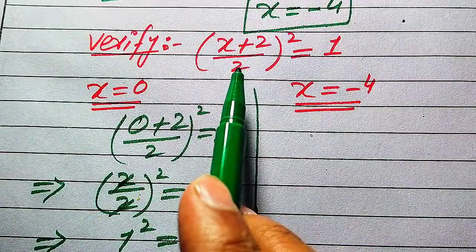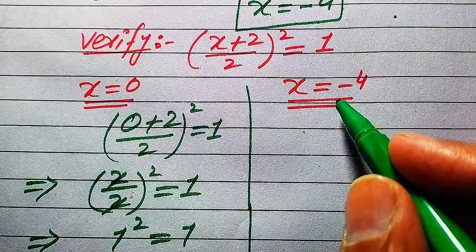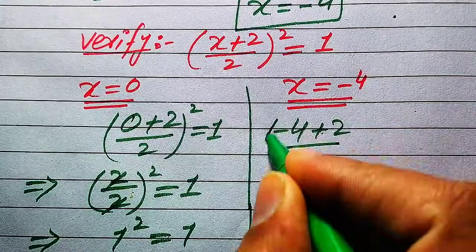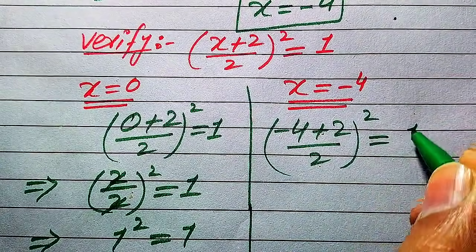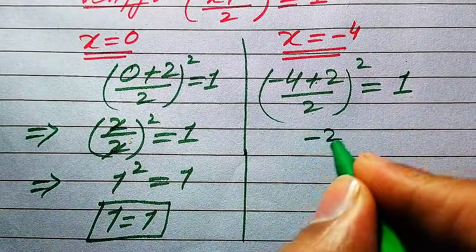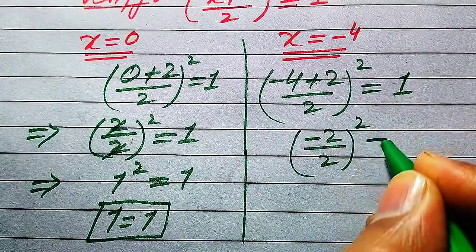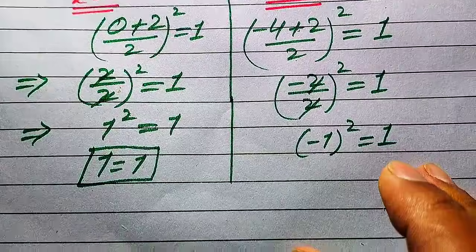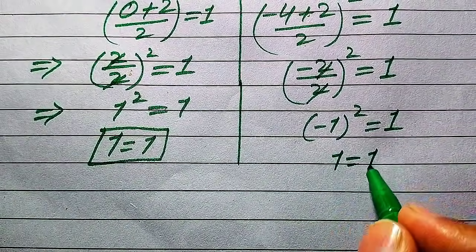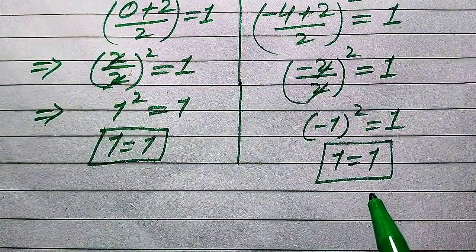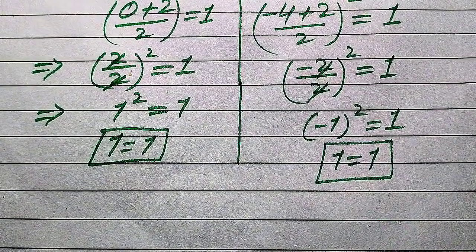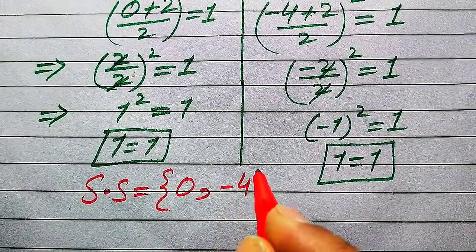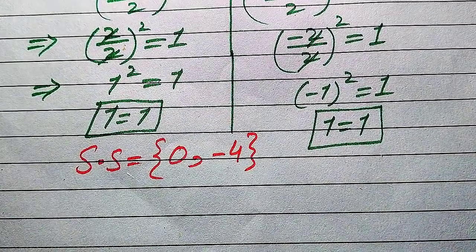Now we verify x = −4. Substituting: (−4 + 2) / 2, whole squared equals 1. This becomes (−2/2)², and the 2s cancel, giving (−1)² = 1, which equals 1 = 1. Both sides are equal, so x = −4 also satisfies the equation. The solution set from the first method is {0, −4}.